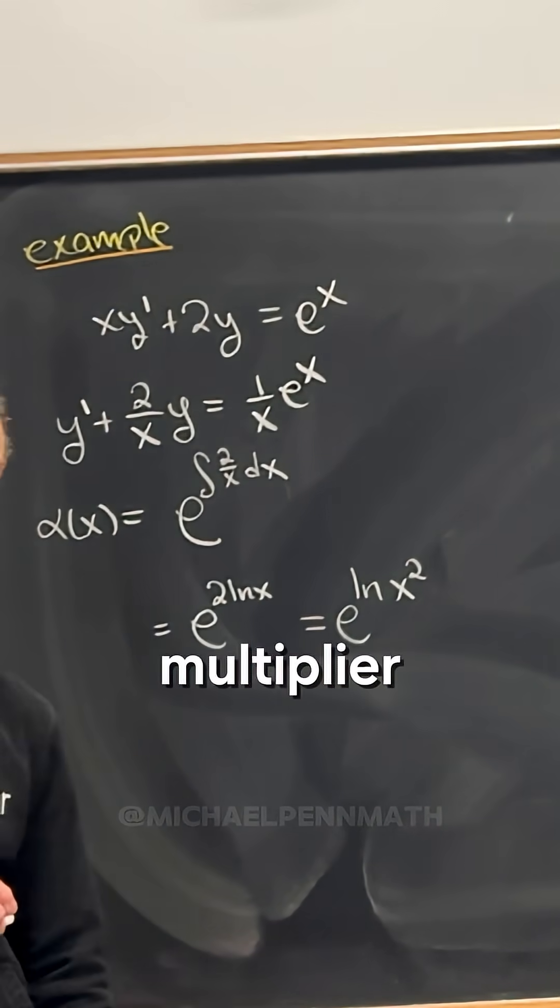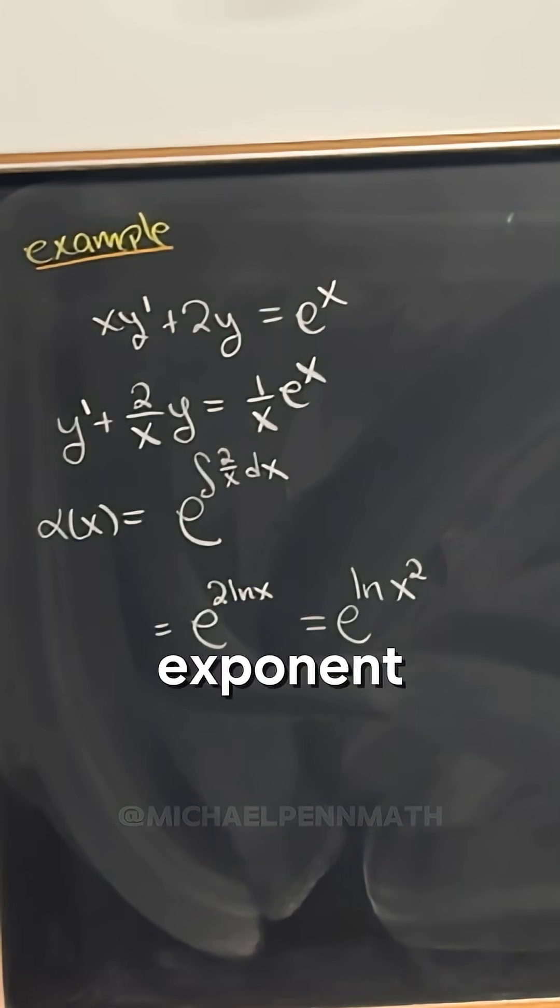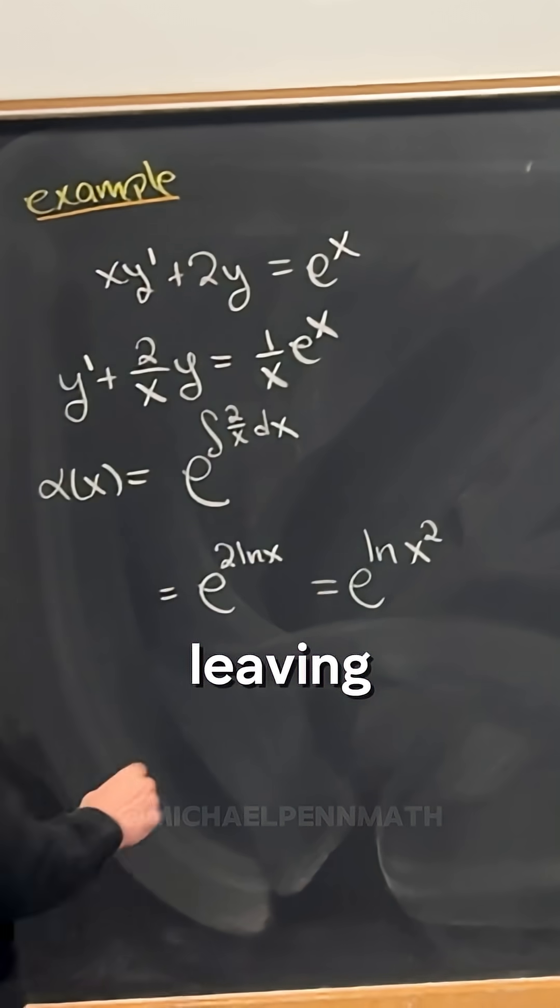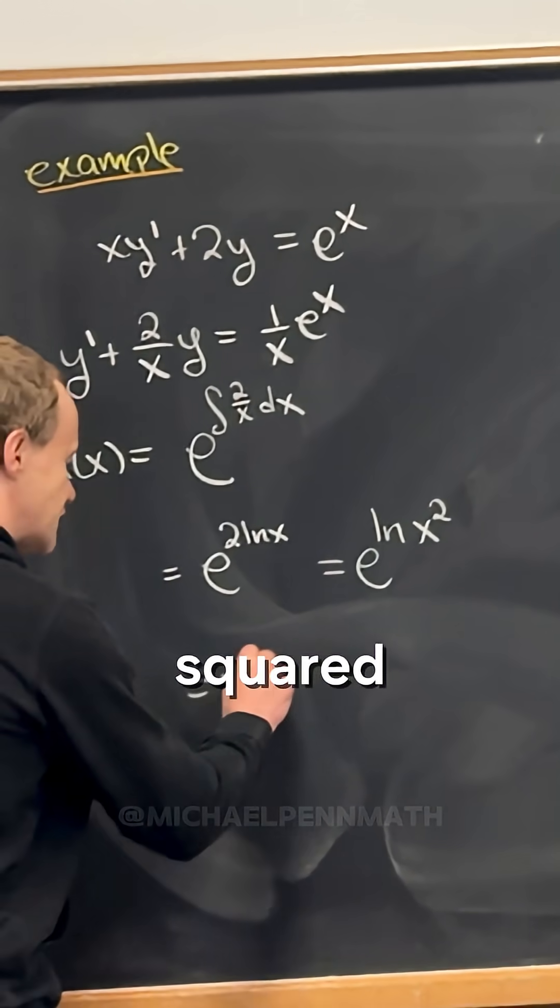Remember, you can bring the multiplier into the logarithm and it becomes an exponent. And now we can cancel the e with the natural log, leaving us with just x squared.